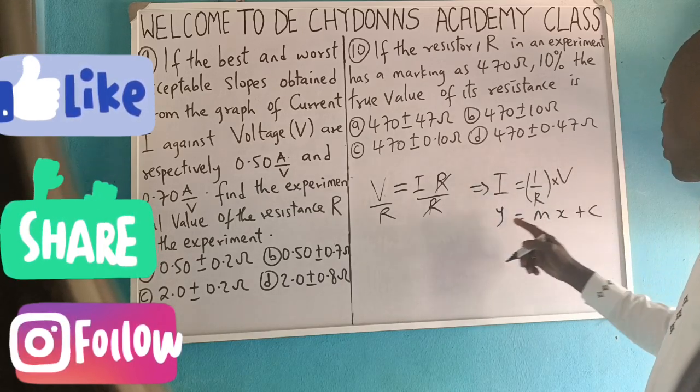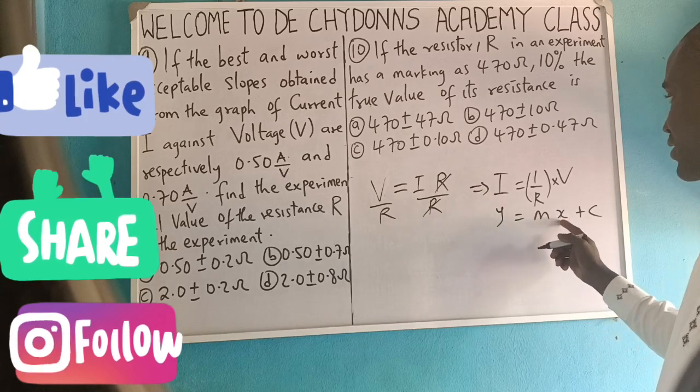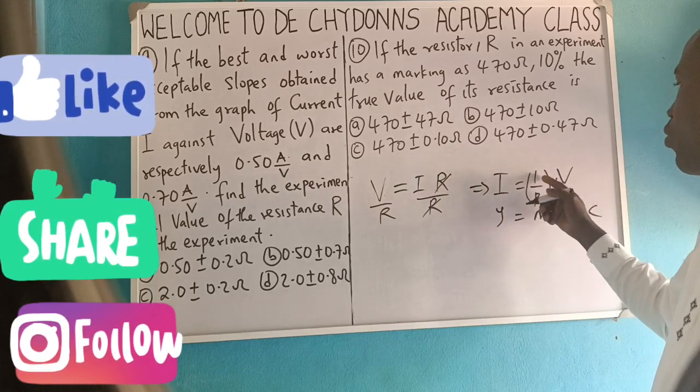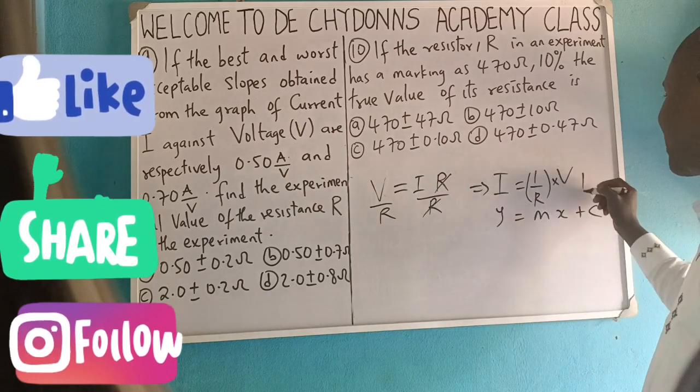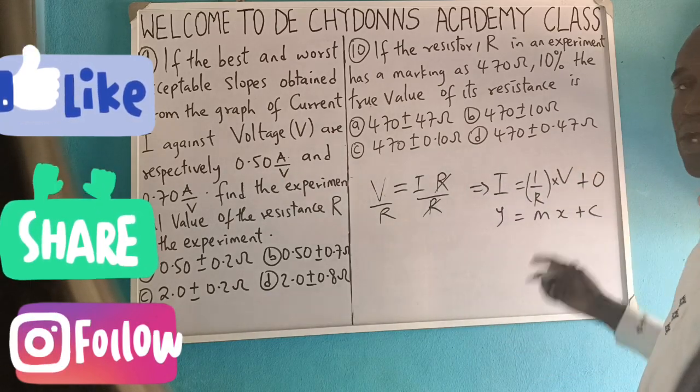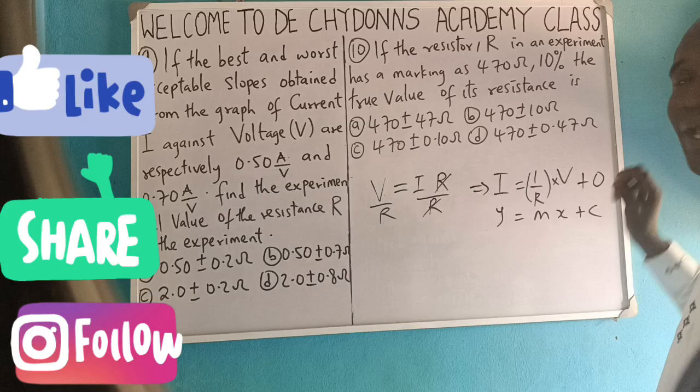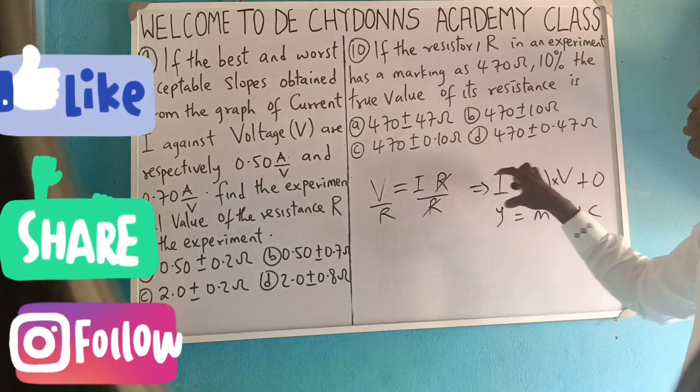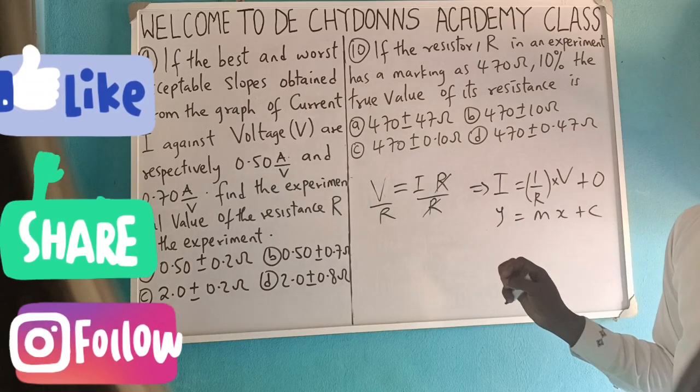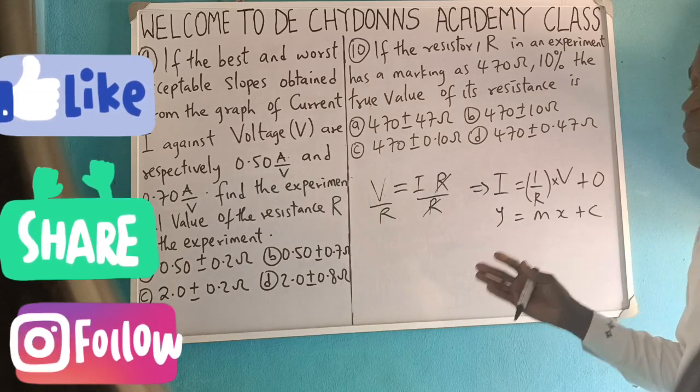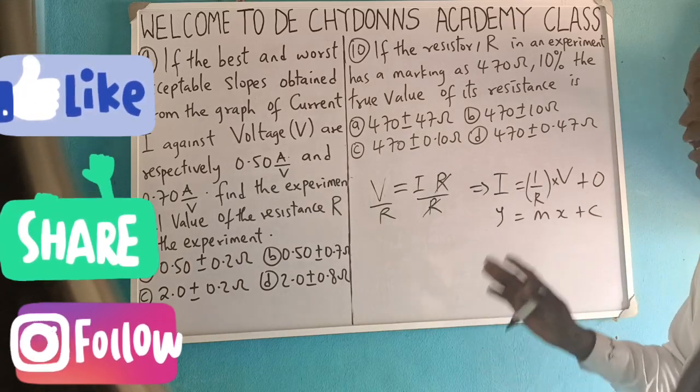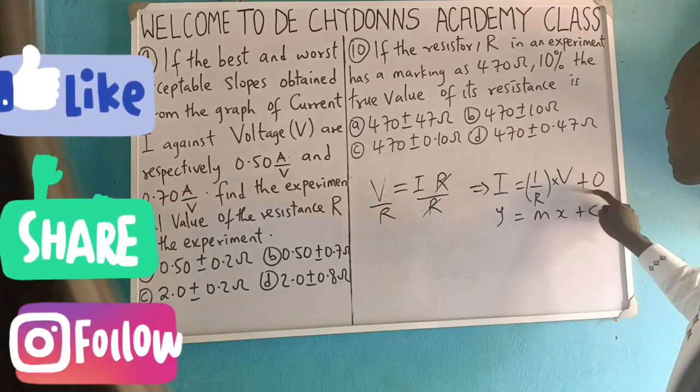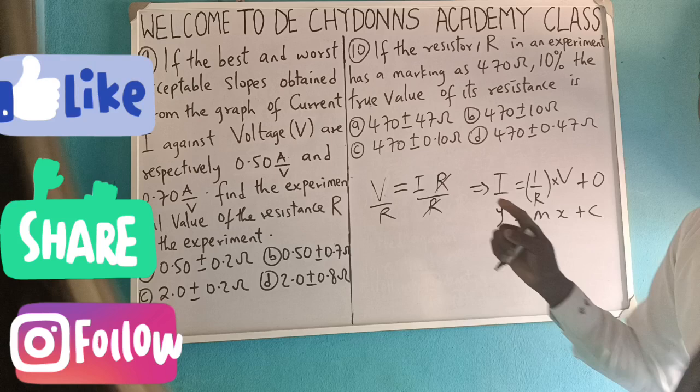This is what we plotted. When you plot Y against X, it is setting I against V. M will become 1 over R, and the intercept will be 0. That is the theoretical intercept. If you do the experiment very well and you are 100% accurate, the intercept will be 0, passing through the origin.